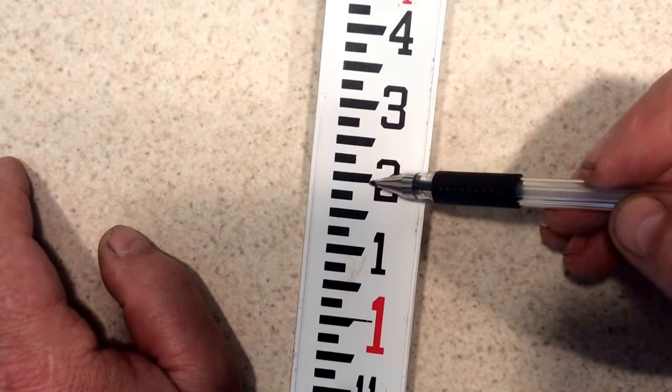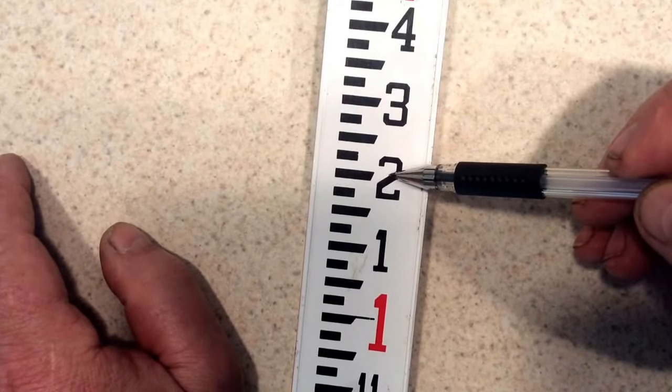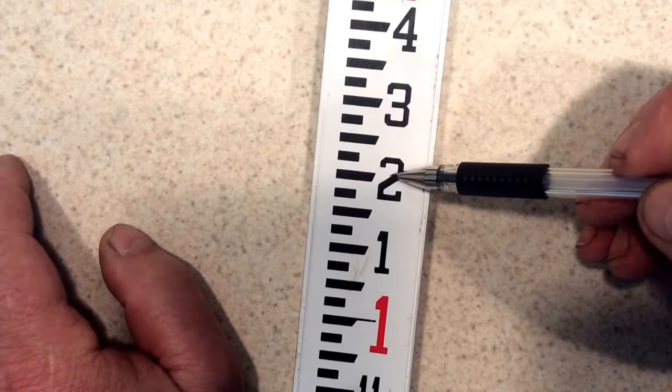This bottom of this line here would be 1 foot 1 and 7 eighths. The top of the line, the long point of this line pointing to the number 2, would be 1 foot 2 inches.